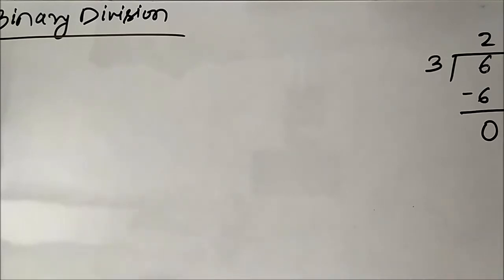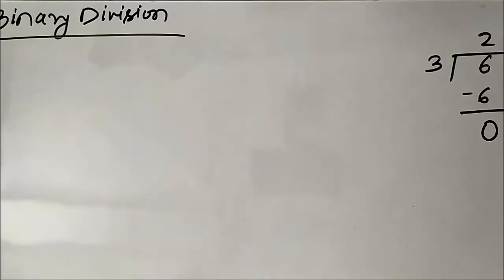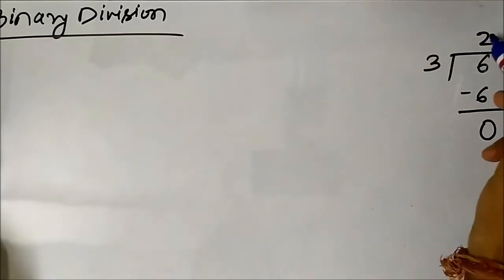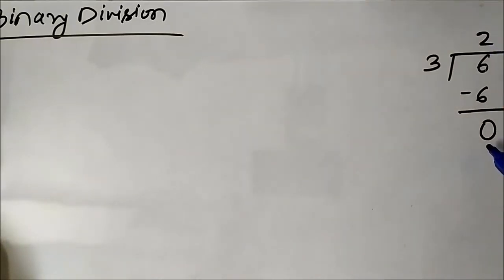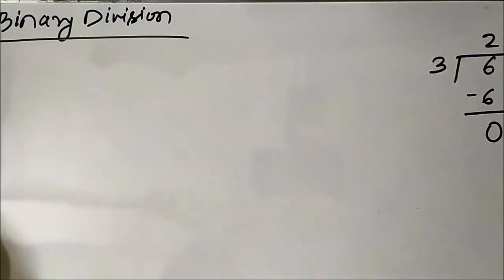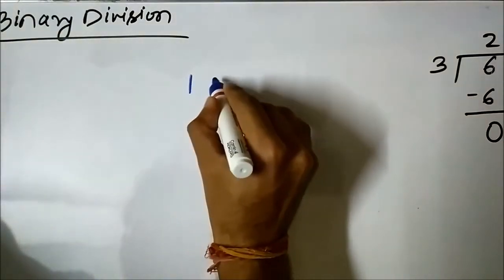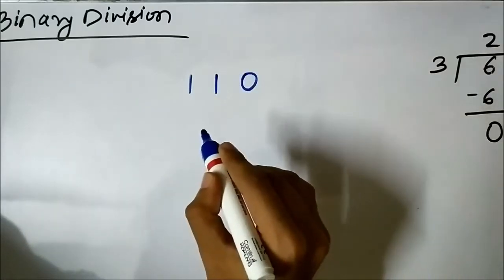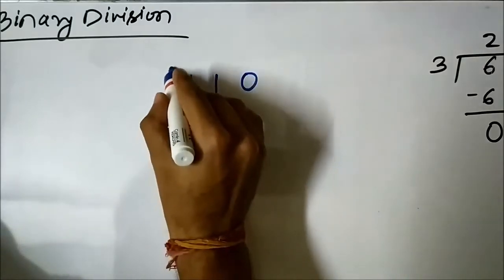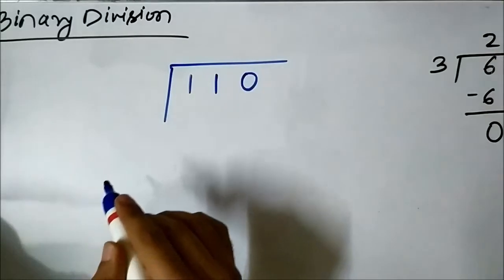Let us directly take an example to demonstrate how binary division works. Let us perform the division 6 divided by 3. In decimal form the quotient is 2 and the remainder is 0. Now let us do it in binary form: 6 is 1 1 0 in binary.